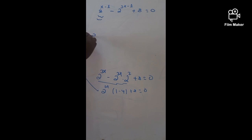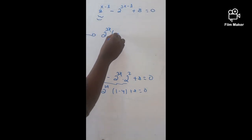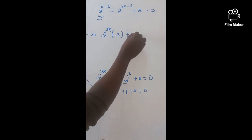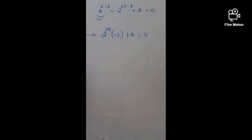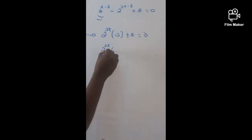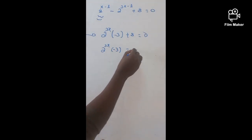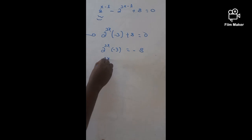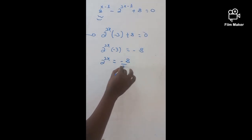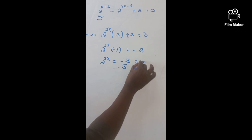From here, you can say: 2 raised 3X into negative 3, plus 8, which is going to be 0. Now we have to move this. 2 raised 3X times negative 3 is going to be negative 8, because when we move 8 to the right it becomes negative 8. And let's divide both sides by minus 3: 2 raised 3X is going to be negative 8 over negative 3, which is 8 over 3.